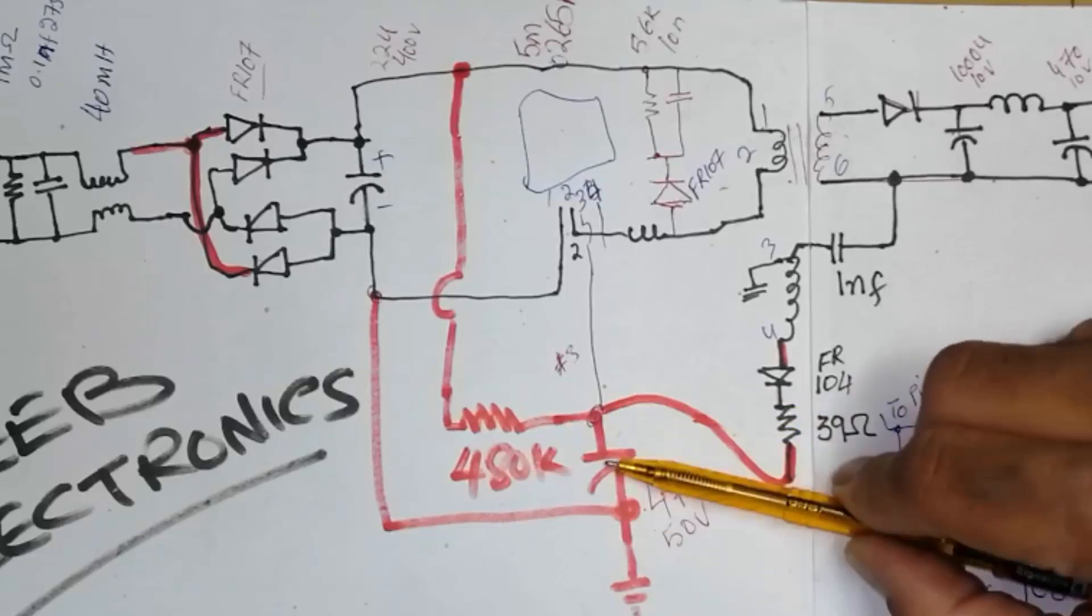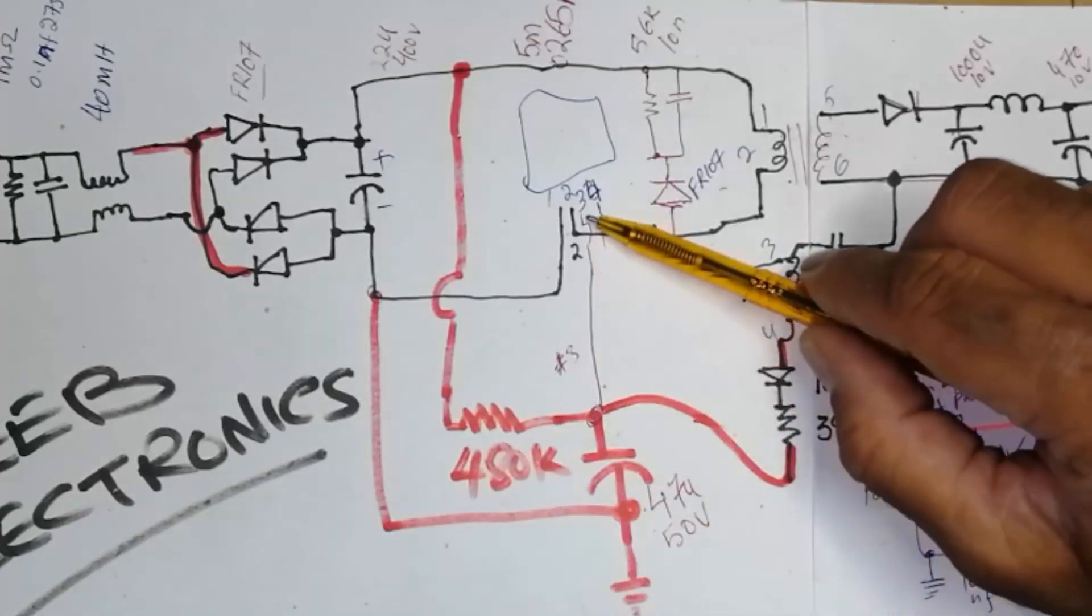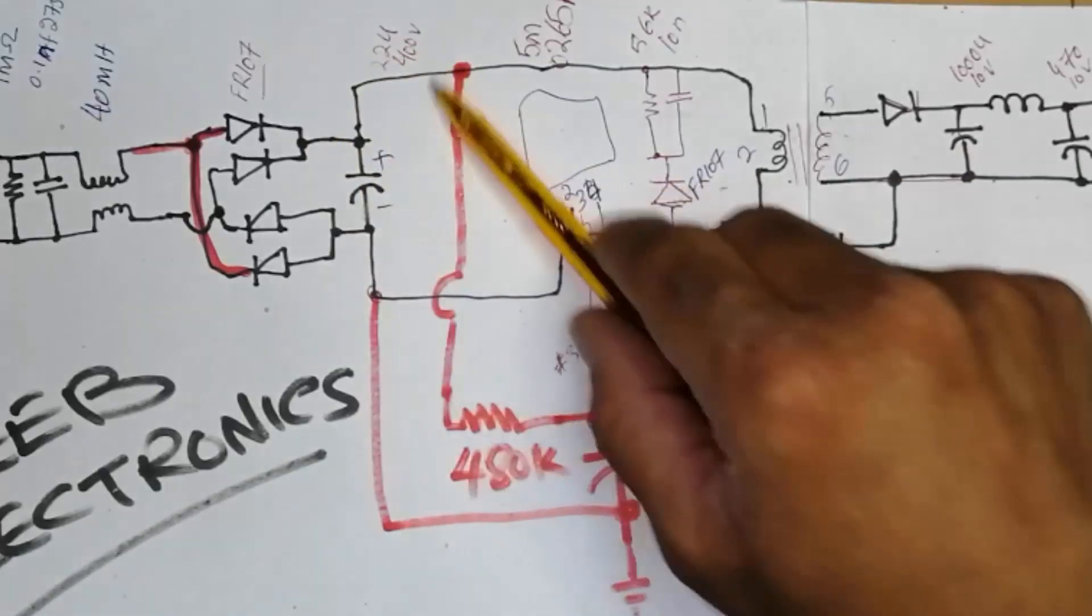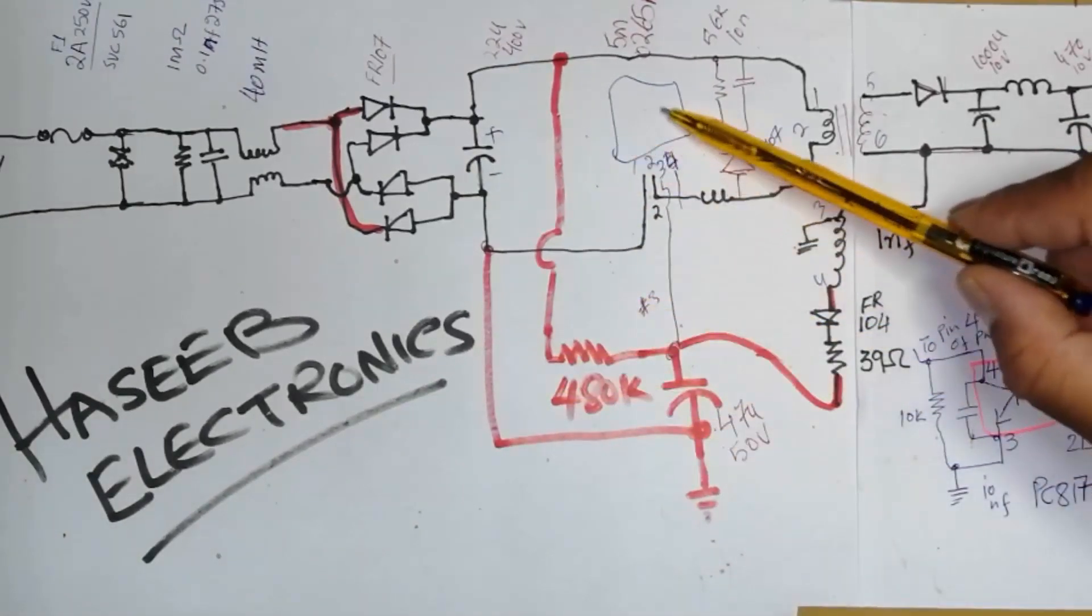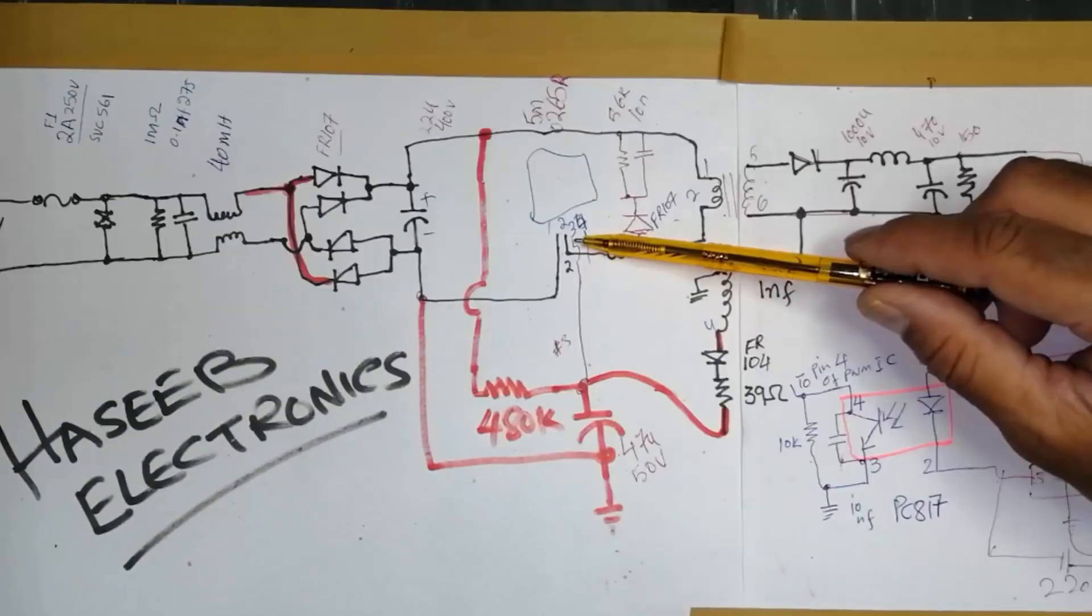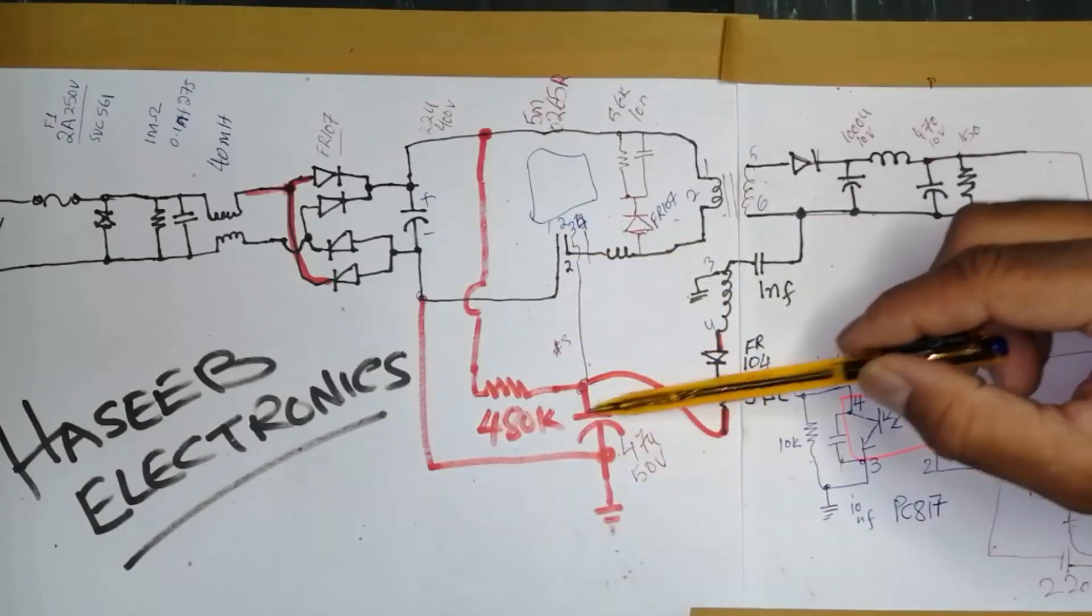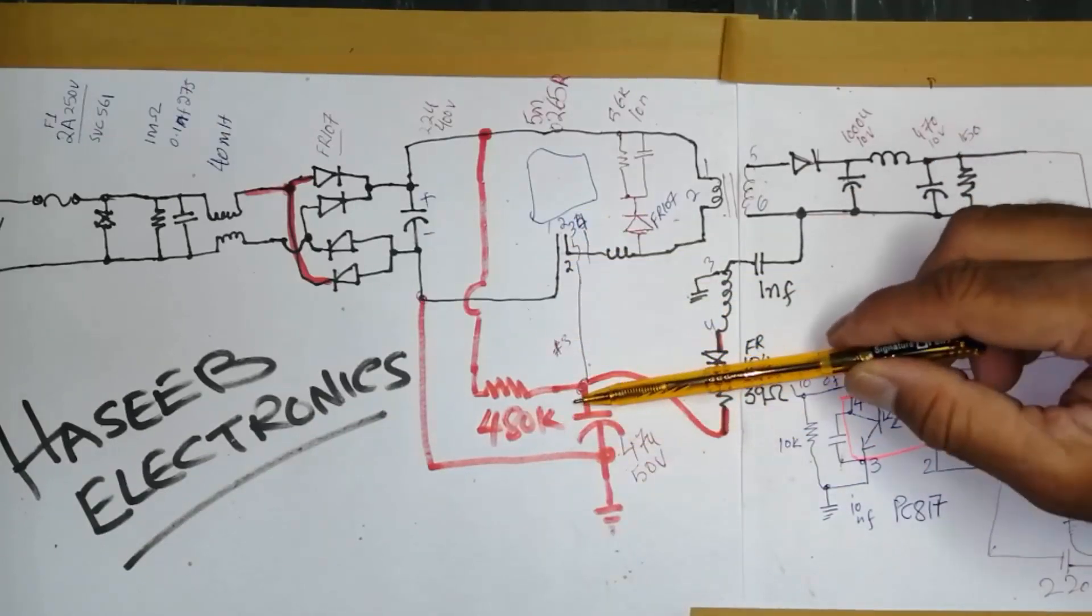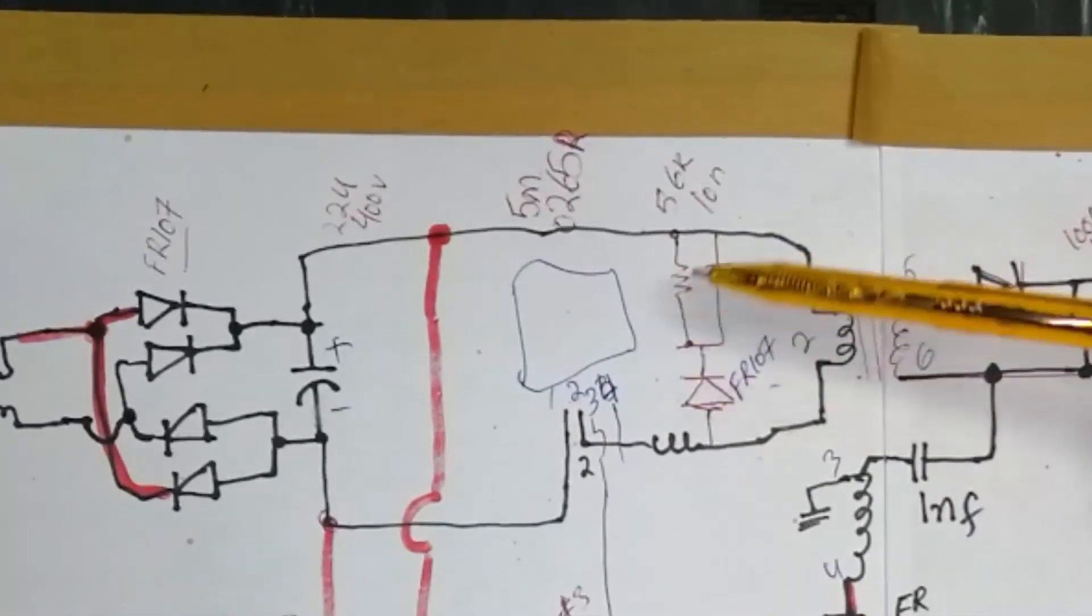This voltage will be rectified from FR104 diode and 39 ohm resistor. This will apply to this capacitor, it will apply to VCC. In the initial starting it will take this voltage, and this IC will start in soft start mode. After that it will take feedback voltage, VCC voltage from this circuit, and capacitor will maintain the charge about 9 volt. This IC will keep working.